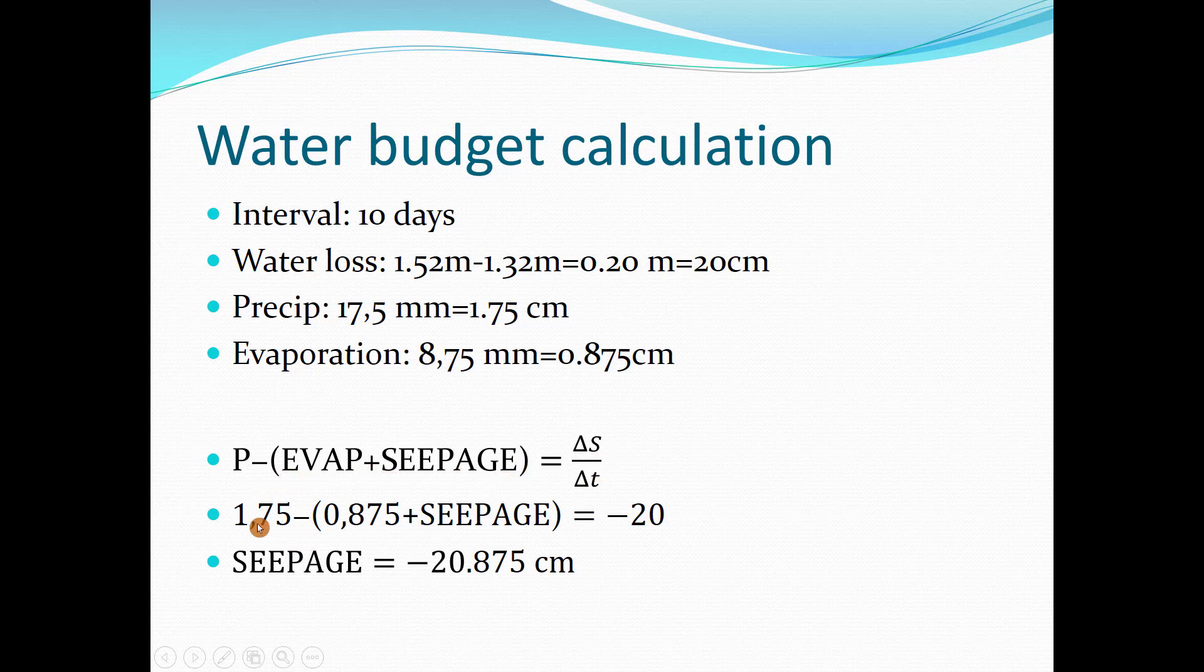This equation is 1.75 centimeters minus 0.875 evaporation plus seepage equals minus 20. Minus because the level of water is decreasing. Only seepage is unknown, so seepage equals minus 20.875 centimeters.